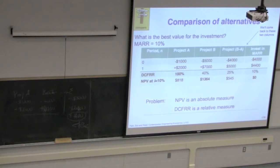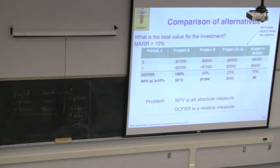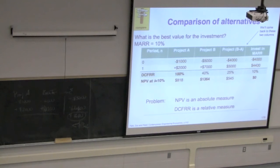If the incremental DCFRR comes in below MARR, the best decision is that the upgrade is not worth it. If it exceeds MARR, it's definitely worth it.